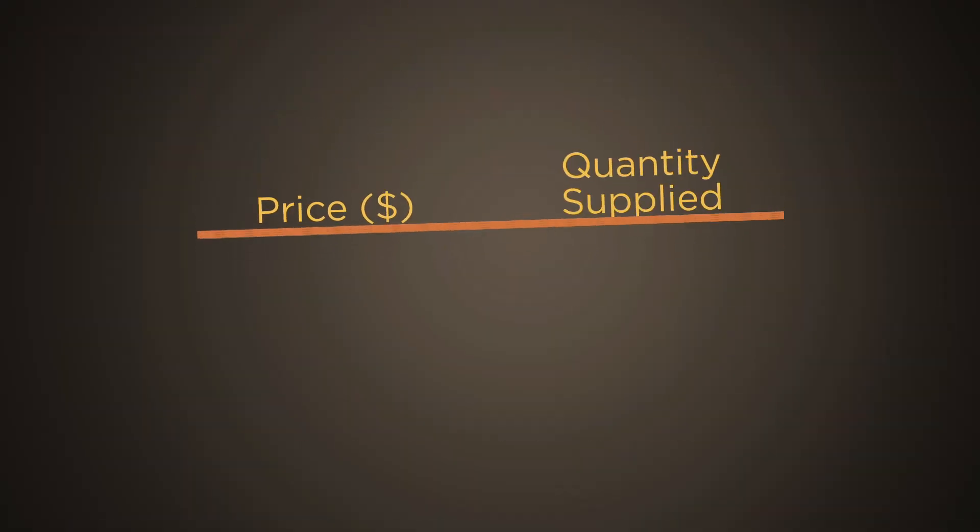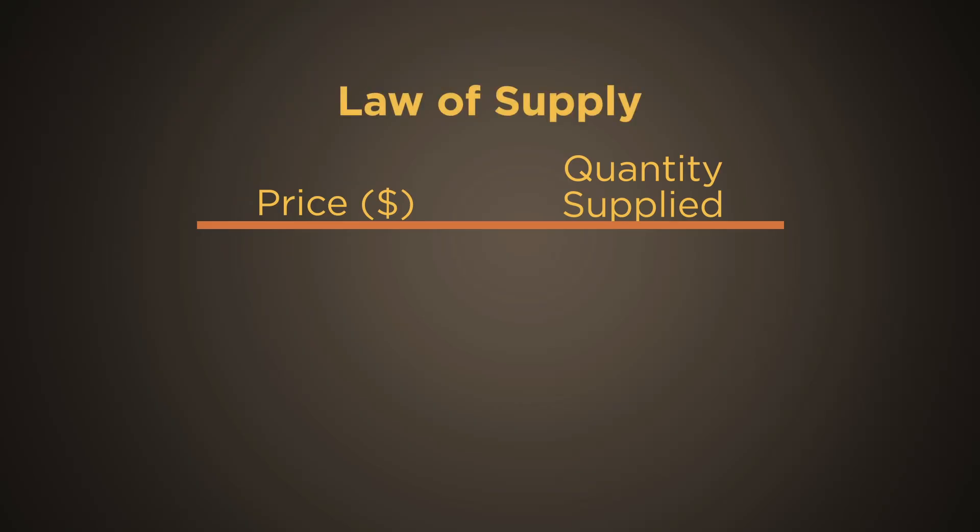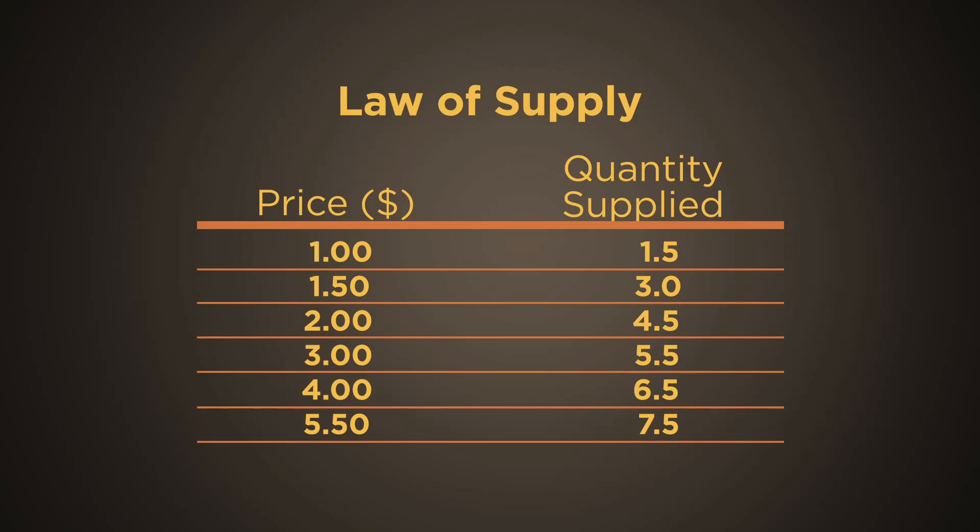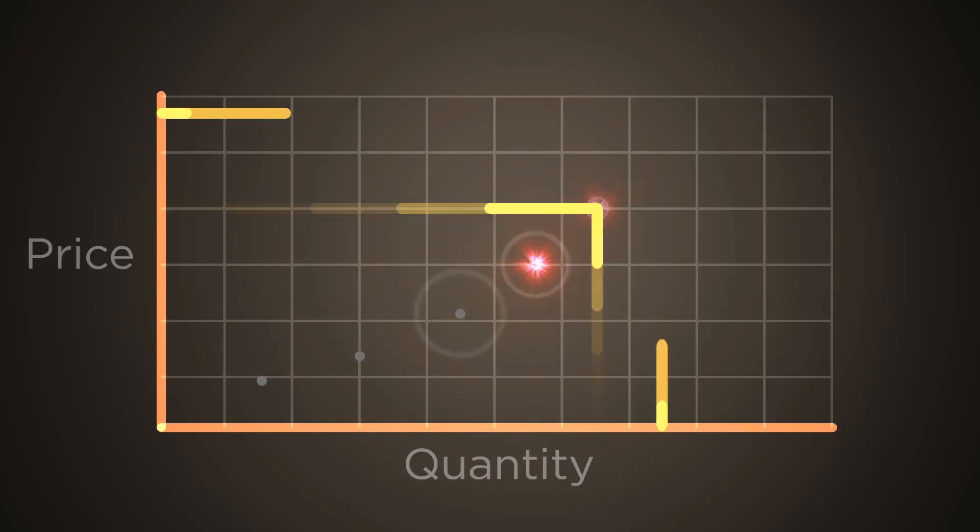Economists refer to the relationship between price and quantity supplied as the Law of Supply. The combination of quantities producers are willing to produce and sell at various prices constitutes a supply schedule. When the supply schedule is graphed, the supply curve is upward sloping.